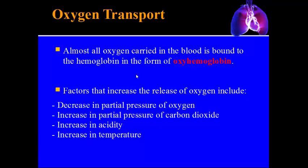Almost all oxygen in the blood is carried on red blood cells by a pigment called oxyhemoglobin — the combination of hemoglobin and oxygen. Factors that increase the release of oxygen include a decrease in partial pressure of oxygen, an increase in carbon dioxide, an increase in temperature, and an increase in acidity. All four of these triggers signal that the body needs more oxygen released to cells.